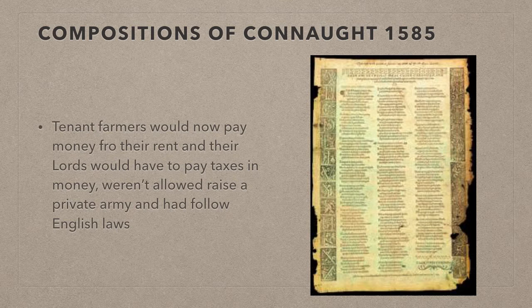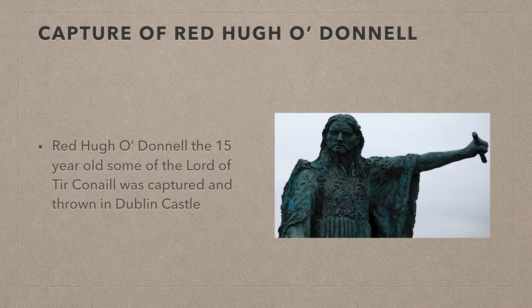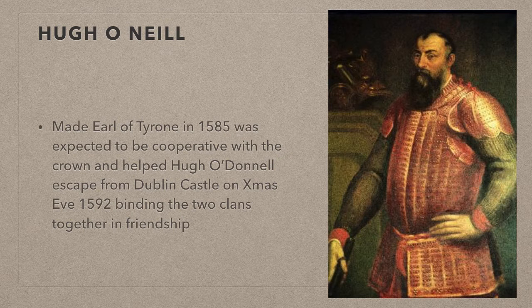English attempts to gain greater control of the powerful Gaelic Lords in Ulster really started with the capture of 15-year-old Red Hugh O'Donnell, who was the son of the Lord of Tyrconnell, or Donegal, in 1587. He was imprisoned and kept in Dublin Castle. They also sent Hugh O'Neill — the grandson of the 1st Earl of Tyrone who had submitted to Henry VIII in his surrender and regrant policy — to rule Tyrone in 1585. Hugh O'Neill had been raised in the Pale and given an English education in the hope that he would be more cooperative with English rule.